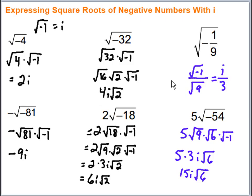So that's how you simplify square roots of negative numbers using i. It all hinges on i being the square root of negative 1, which lets us pull that piece out and then simplify what's left using the rules we know for simplifying square roots. Hope this video was helpful — keep working hard on your math, you can do it!